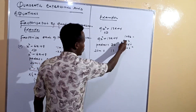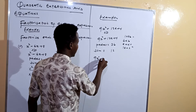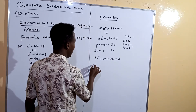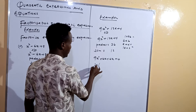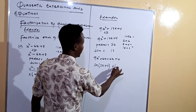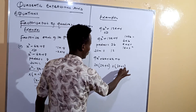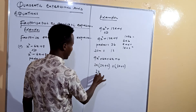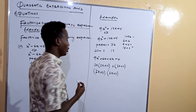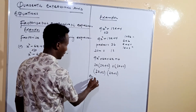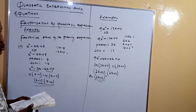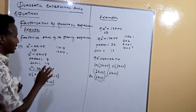So we replace 12x with 6x plus 6x, giving 9x squared plus 6x plus 6x plus 4. In the first pair the common factor is 3x, giving 3x times (3x plus 2). In the second pair the GCD is 2, giving 2 times (3x plus 2). The final answer is (3x plus 2)(3x plus 2), which can also be written as (3x plus 2) squared.